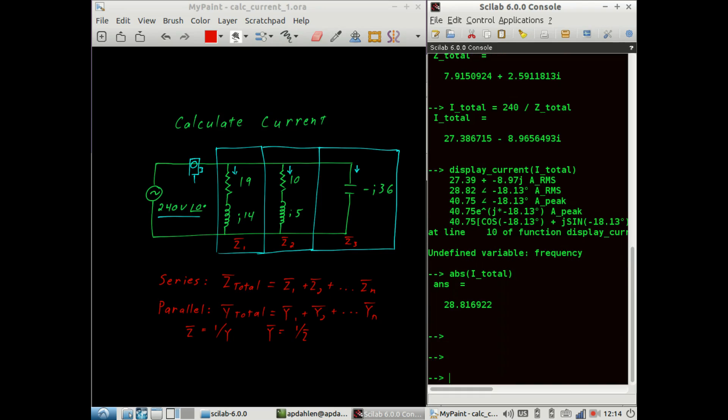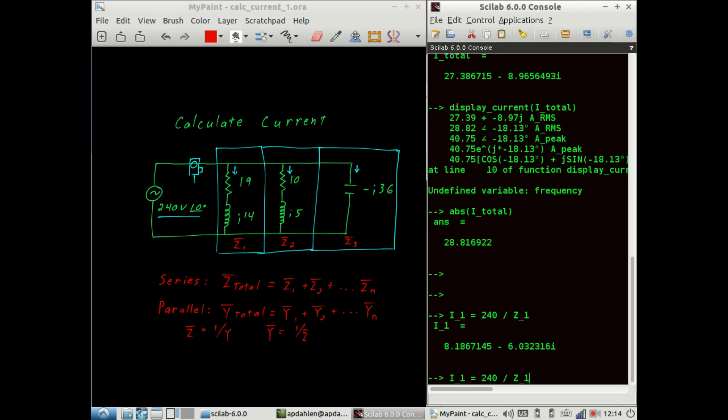I did promise you another way to solve a circuit, and that is to calculate the individual branch currents. So we could say that the current for motor 1 is equal to the source divided by the impedance for that particular branch. We could do the same for the other branches as well.